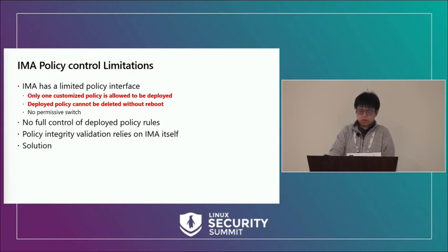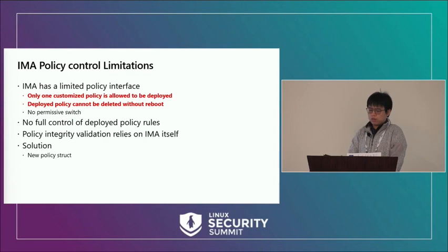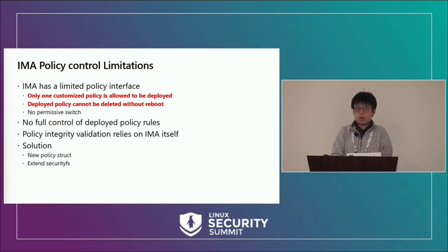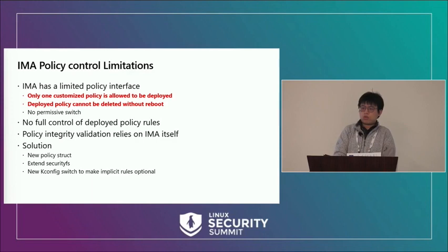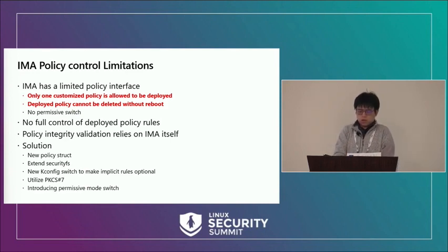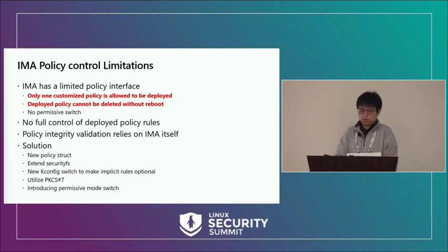Our solution adds a new kernel structure to track the deployed policy state — like policy flags — so we can deploy multiple different policies. We extended the security file system to deploy and manage multiple policies. We added a kernel switch to remove implicit deployed policy rules. We utilized PKCS7 to verify policy integrity against the kernel trusted key ring instead of IMA's own key rings. We also introduced a permissive switch for IMA.